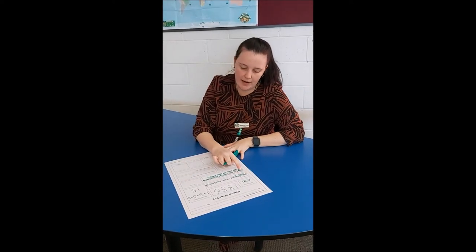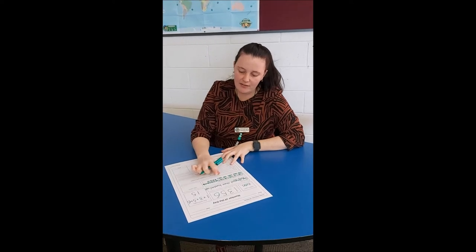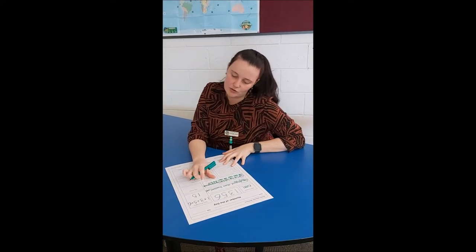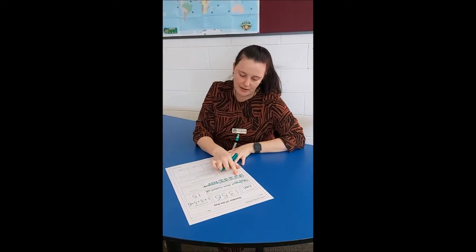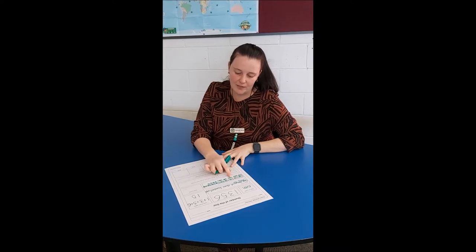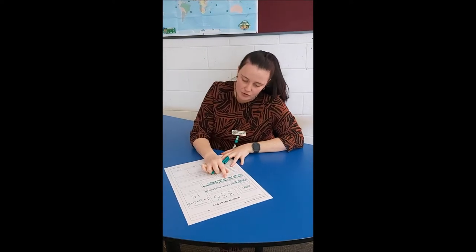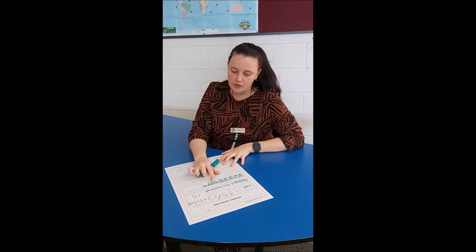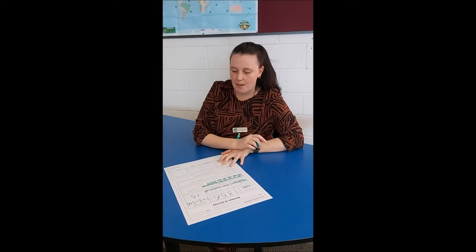Counting up: 100, 200, 300, 400, 500, 600, 700, 800, 900, 1,000, 1,100, 1,200, 1,300 — and then 50, 2, 4, 5, 6. Yep, that's the number 1,356.